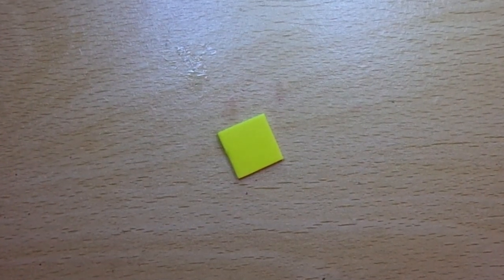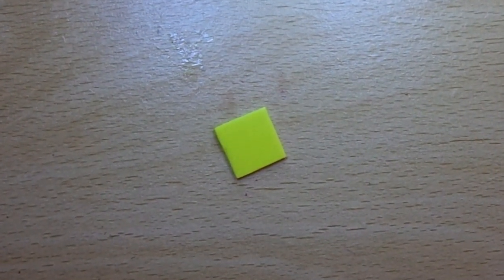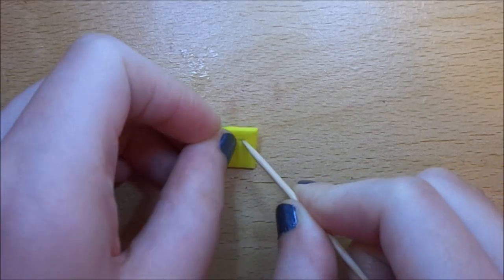To make the cheese, cut a square piece of yellow craft foam and then push holes through it with a toothpick.